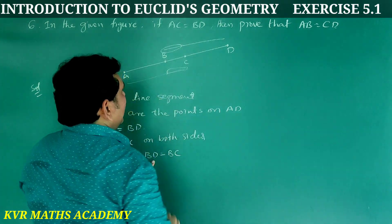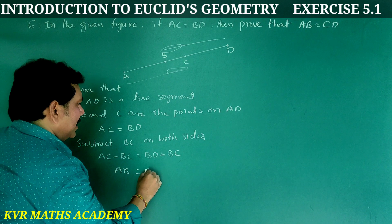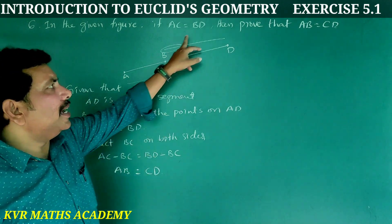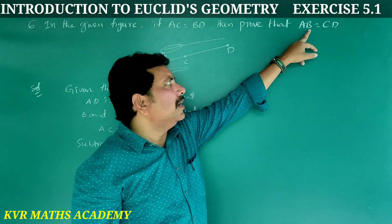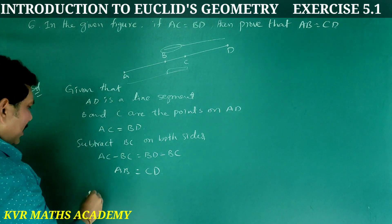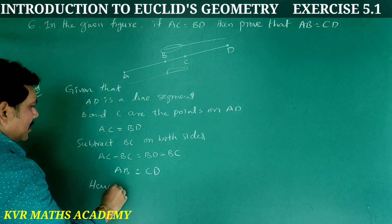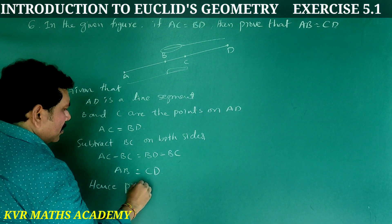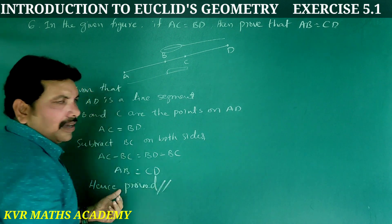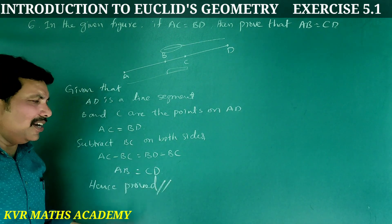AC minus BC gives AB and BD minus BC gives CD. Therefore AB is equal to CD. Hence proved.